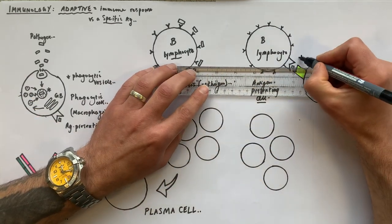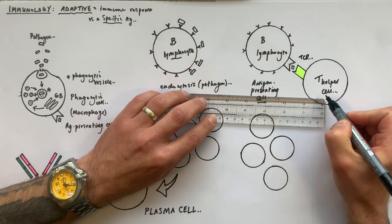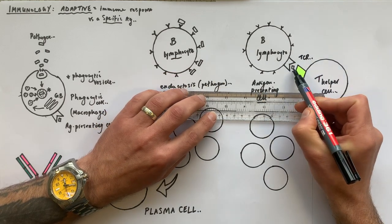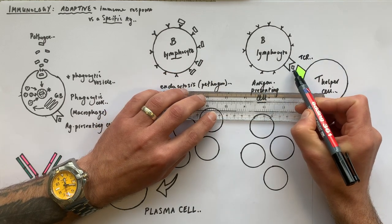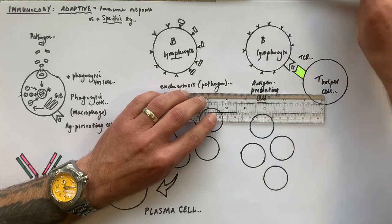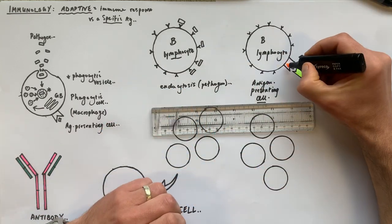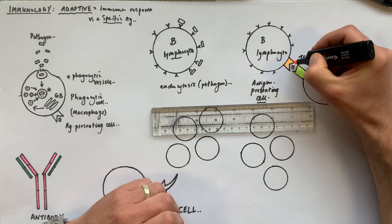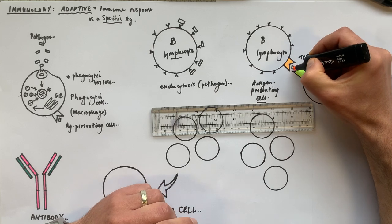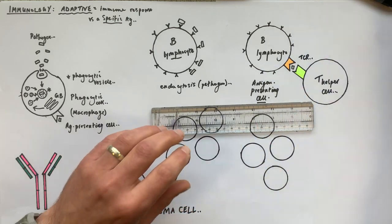The TCR — T cell receptor — has a complementary shape to the antigen presented by the B lymphocyte. The protein in the cell membrane of the B lymphocyte is presenting the antigen to the T helper cell.